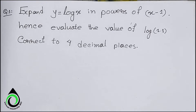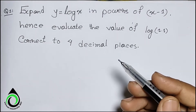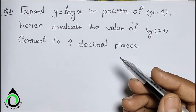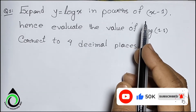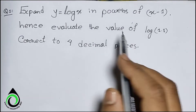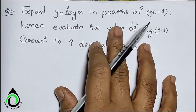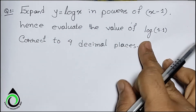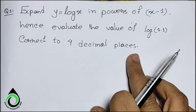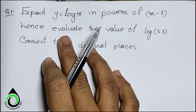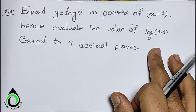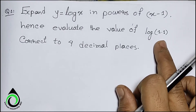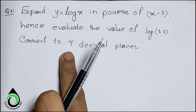Assalamualaikum. Welcome to Virtual University BD. Today we have a question on Taylor's theorem. We have seen Taylor's theorem, we have seen the proof of Taylor's theorem, and we have seen some other remarks. Now we have to solve a question using Taylor's theorem. We have to find the value of log 1.1 accurate to 4 decimal places.